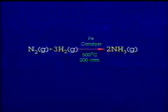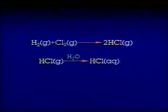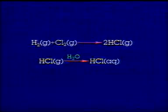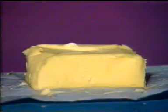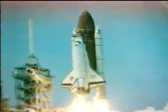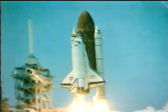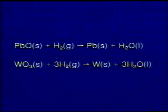The major industrial use of hydrogen is in the synthesis of ammonia by the Haber process. Other uses include the manufacture of hydrochloric acid, manufacture of organic chemicals such as methanol, and manufacture of margarine. Liquid hydrogen is used as a rocket fuel, and hydrogen can also be used to extract some metals from their oxides.